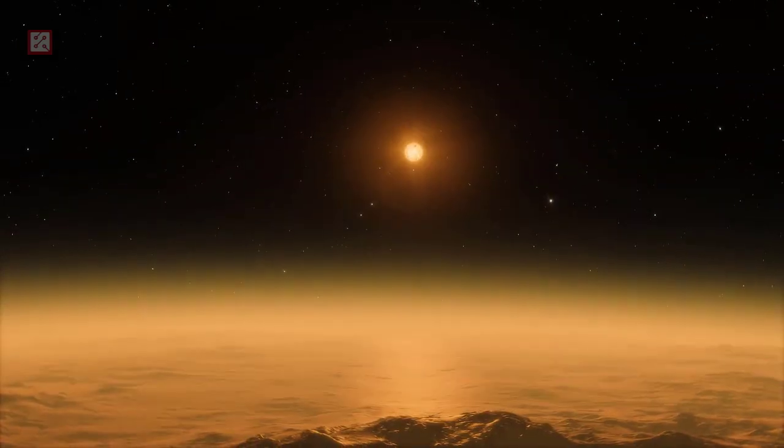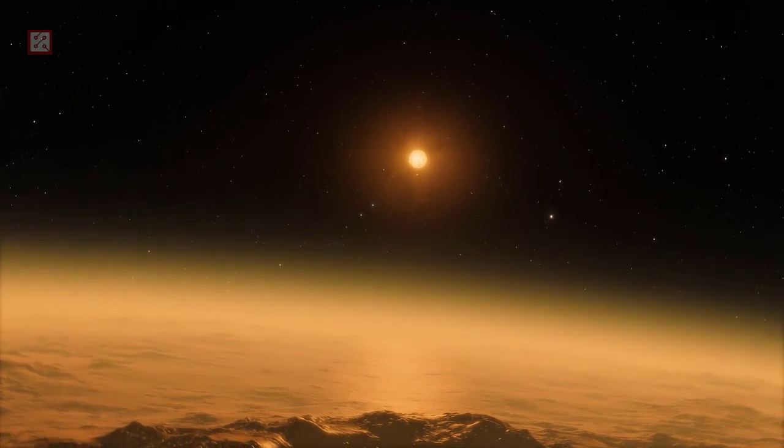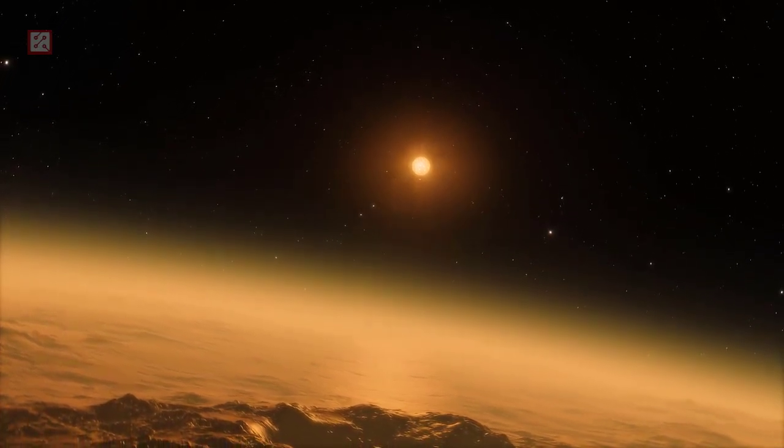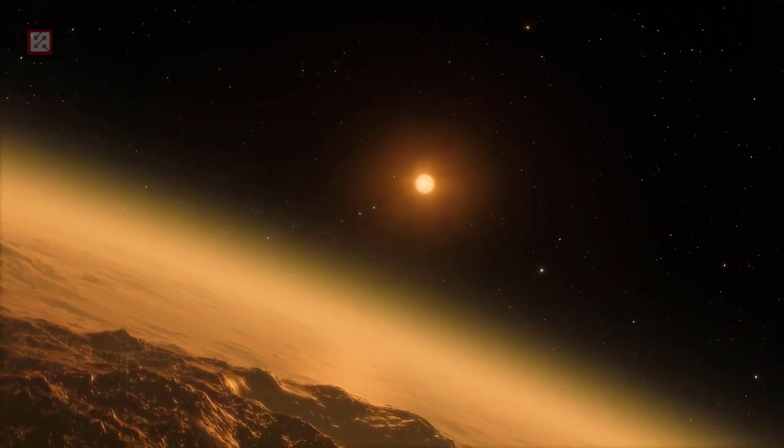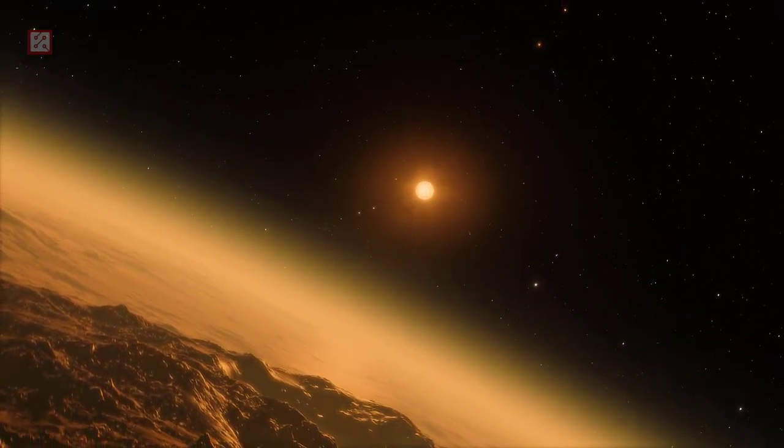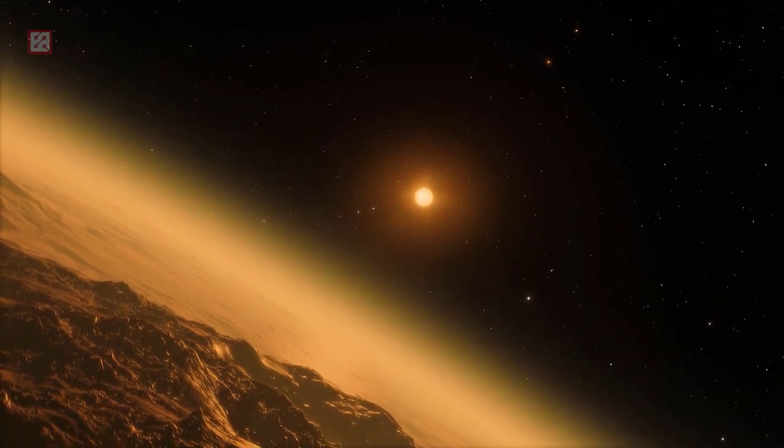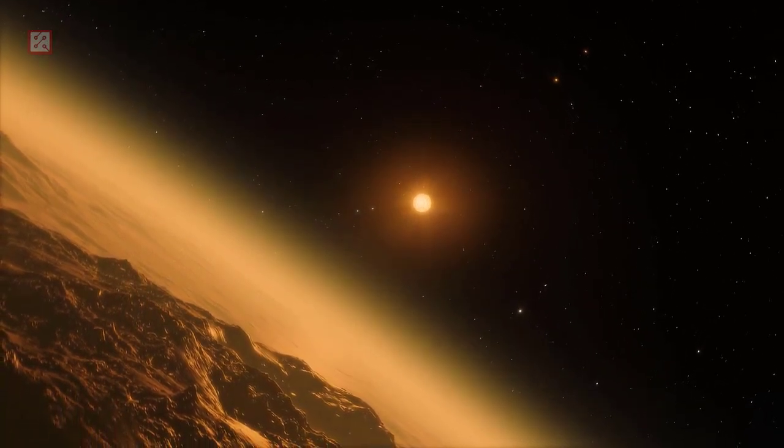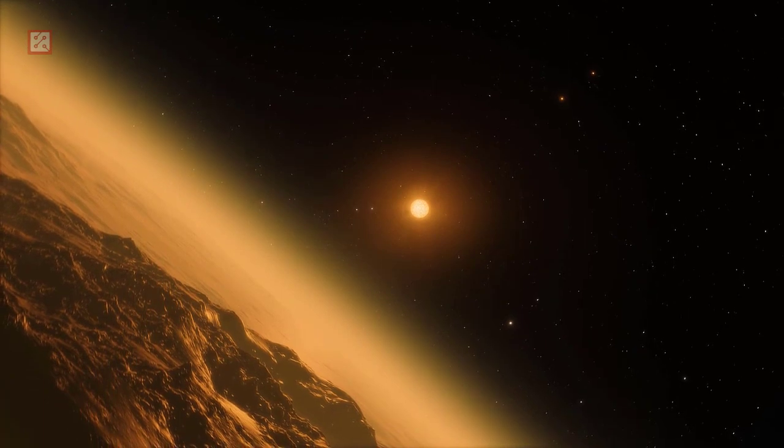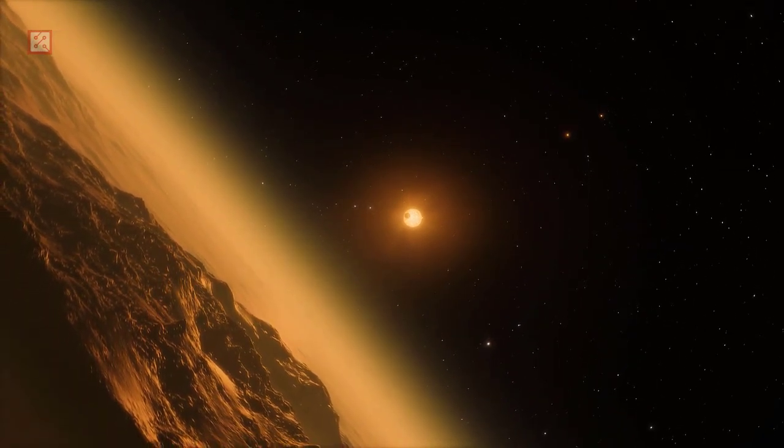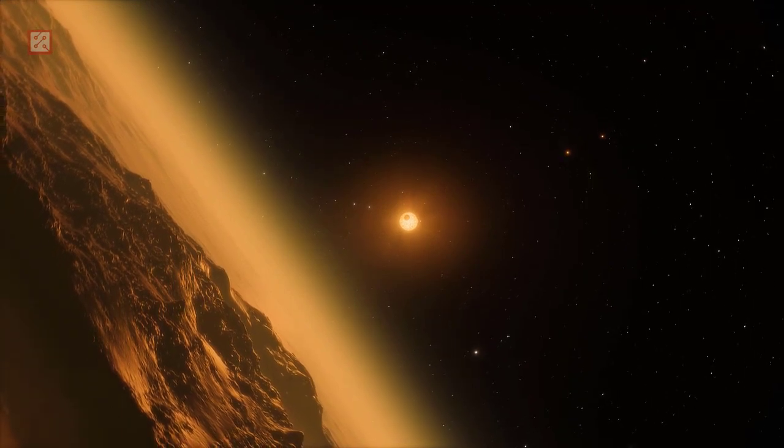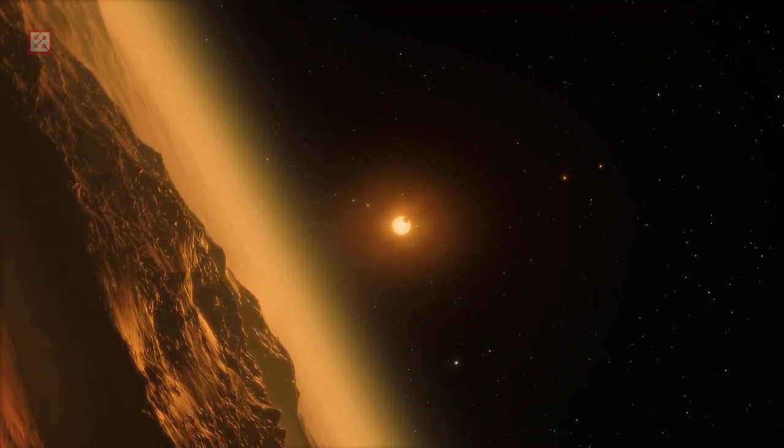Number 8: TRAPPIST-1D. TRAPPIST-1D is a small exoplanet with the mass about 30 percent the mass of Earth, which orbits on the inner edge of the habitable zone of the ultra-cool dwarf star TRAPPIST-1, approximately 40 light-years away from Earth in the constellation of Aquarius. TRAPPIST-1D is a closely orbiting planet with one full orbit taking just 4.05 Earth days to complete and it orbits at a distance of just 0.02228 astronomical units from the host star.